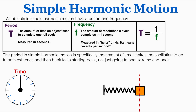All objects in simple harmonic motion have a period and a frequency. Period is the amount of time an object takes to complete one full cycle, measured in seconds. Frequency is the number of repetitions completed in one second, measured in Hertz, which means events per second. Period equals one over frequency. In simple harmonic motion, the period is the amount of time it takes the oscillation to go to both extremes and then return to its starting point — not just to one extreme and back.